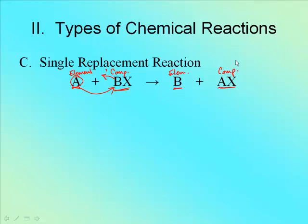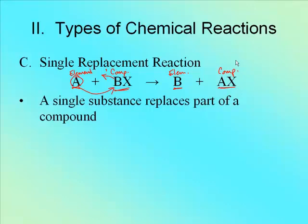So it's: element plus compound yields element plus another compound, but the left and right sides are different. The definition is: a single substance replaces part of a compound. This is really important because the number one mistake people make is seeing 'single' and two things and thinking it's composition, then merging everything together to make some compound like ABX — that is wrong. Always remember something has to come off by itself.